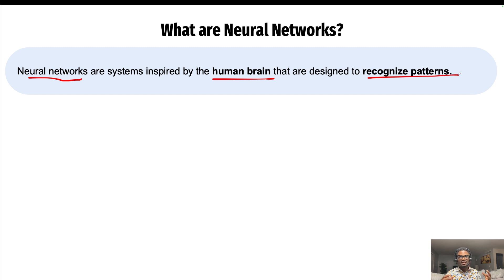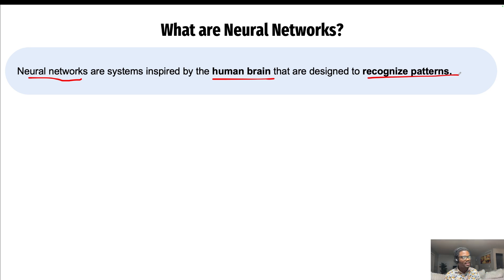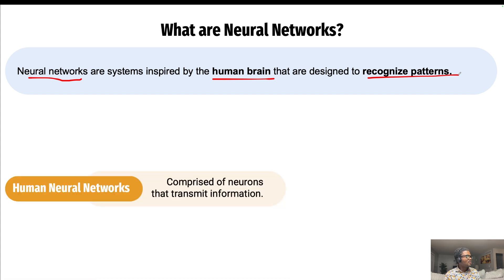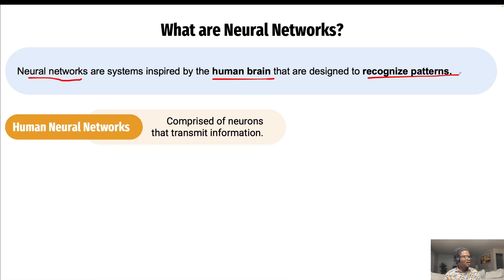Neural networks are designed to recognize patterns. The reason you are able to differentiate between the image of a dog and the image of a cat is because of the neurons in your head — the neurons have kind of mastered what a dog looks like and what a cat looks like. With artificial neural networks, that is exactly what we are trying to do: mimic how the brain works.